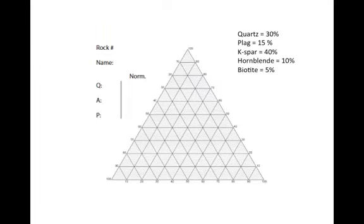The percentages that we estimated were quartz 30%, plagioclase 15%, K-spar 40%, 10% hornblende, 5% biotite. We decided what was appropriate is to use the quartz-alkali feldspar-plagioclase diagram, the QAP diagram. We have to ignore anything that's not quartz, plagioclase, or K-spar in order to name the rock.